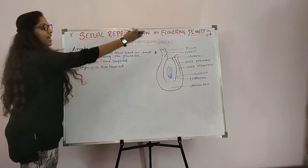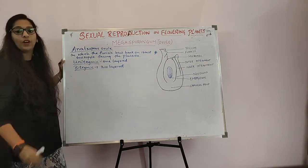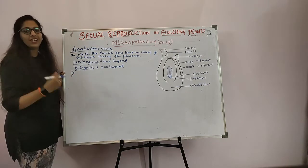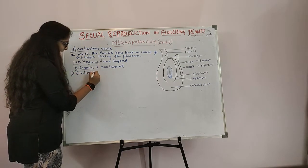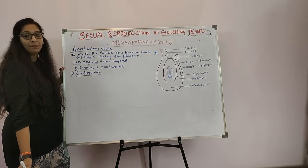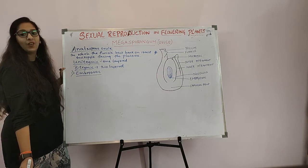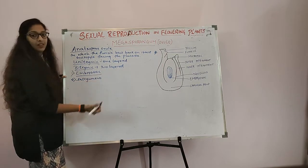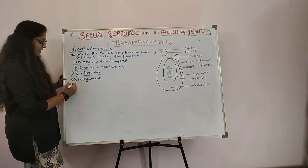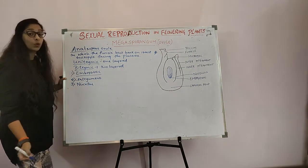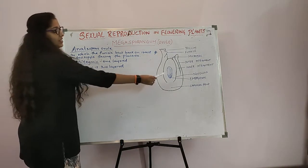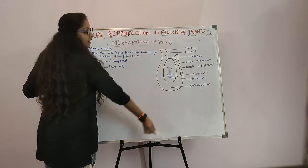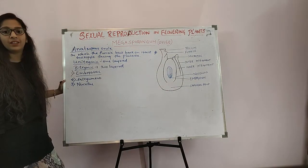The Anatropous Ovule consists of three important parts. The first part is the Embryo Sac, which represents the Female Gametophyte. The second part is the Integuments — there are two integuments, one outer and one inner. The third part is the Nucellus. This is the Embryo Sac, and this is the Nucellus part.